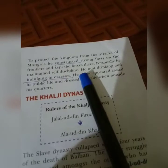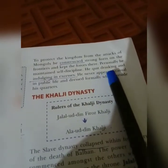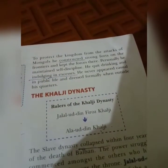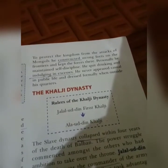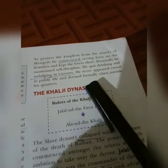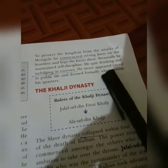He never appeared casual in public life and was a very formal person in public. When he was outside his quarters, he dressed formally. This brings us to the end of Giyasuddin Balban's rule, and we now move on to the next dynasty — the Khalji dynasty.